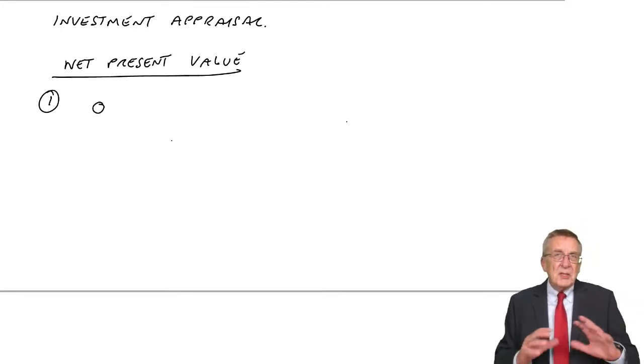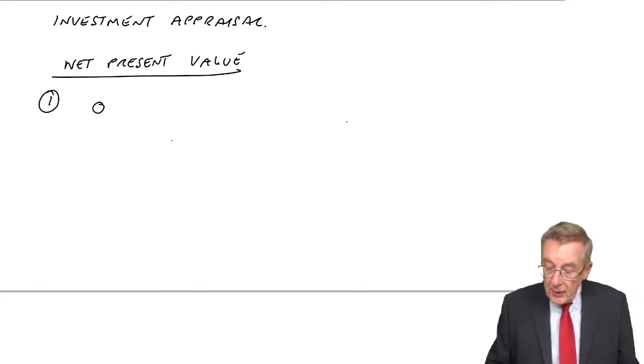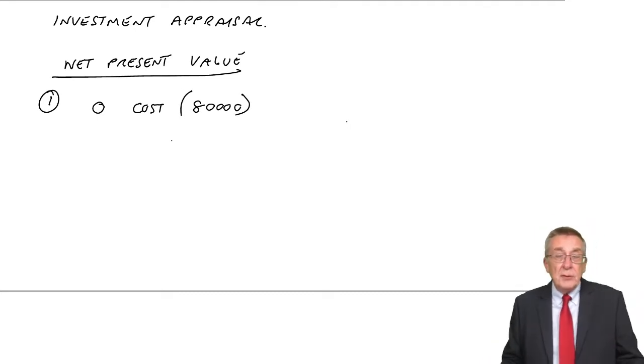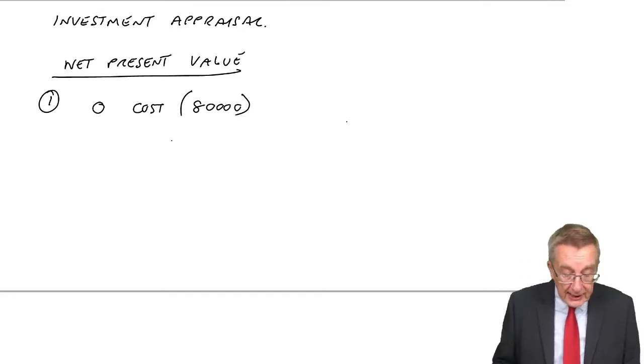And so what do we expect these flows are? As of now, which we always call time zero, we expect we'd have to spend £80,000. I'll put it in brackets, it's an outflow, we pay in cash.